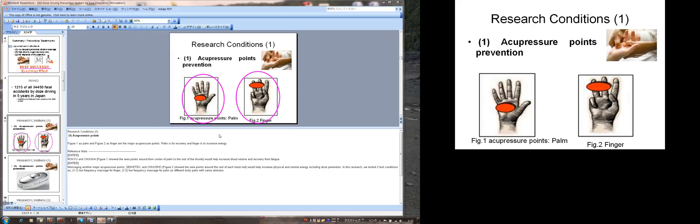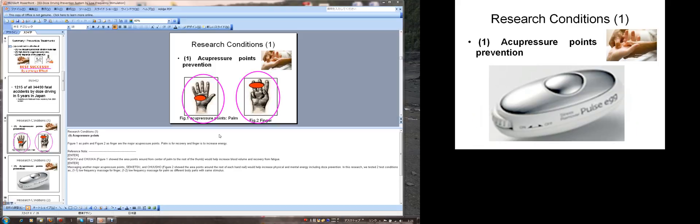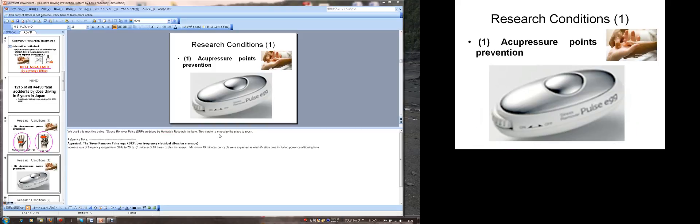Research condition 1, acupressure points. Figure 1, as a palm, and figure 2, as a finger, are the major acupressure points. Palm is for recovery and the finger is to increase energy. We use this machine called a stress-remover pulse, produced by a Holm-Lyon Research Institute. This vibrates to massage the place to touch.